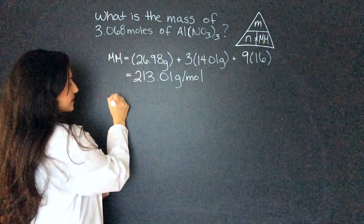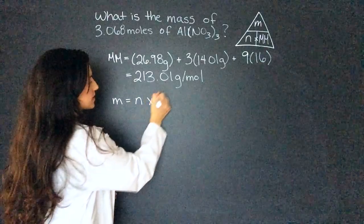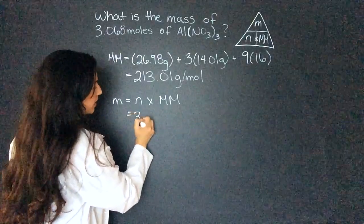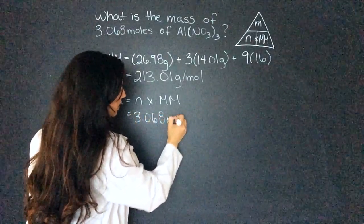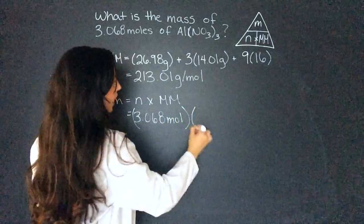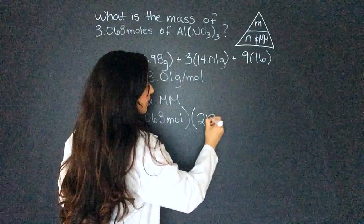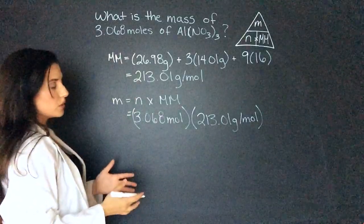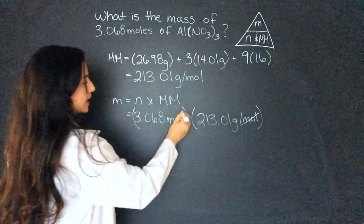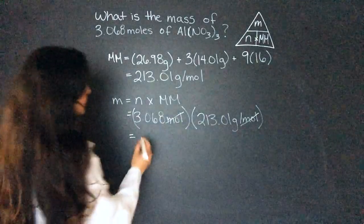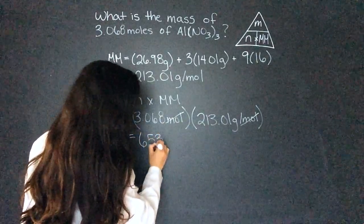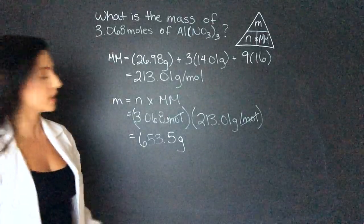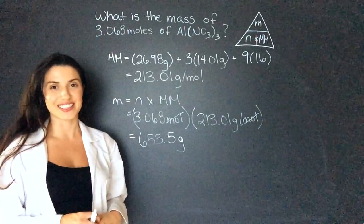Now we can solve for mass. Mass equals moles times molar mass. The moles were 3.068 and the molar mass is 213.01 grams per mole. Once we multiply, the moles cancel out and we're left with grams — that gives us 653.5 grams. Our question had four significant figures, so we have four significant figures in our answer, and we're done.